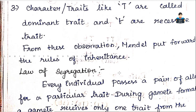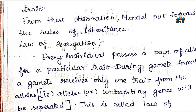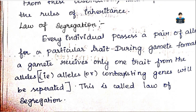The law of segregation and the law of dominance are central to the monohybrid cross. The monohybrid cross also leads us to the dihybrid cross, which is the law of independent assortment. The law of segregation states that every individual possesses a pair of alleles for a particular trait — such as height, color, and shape — and these contrasting alleles separate during gamete formation.